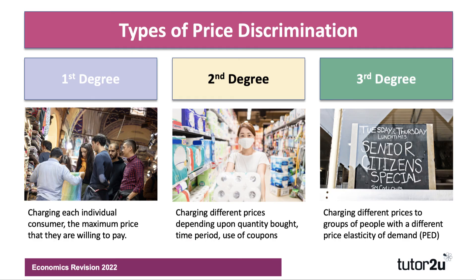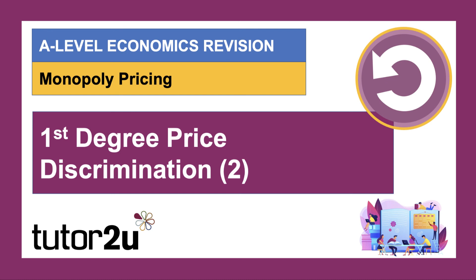Third degree is perhaps the most common type of price discrimination. This is where you're charging varying prices to different groups of people with a different coefficient of price elasticity of demand. The key is to work out which groups have a fairly inelastic demand and which groups have a more price-sensitive demand curve, and you can target and tailor prices accordingly. In the second of our four videos, we'll spend a bit more time focusing on first degree price discrimination. Thank you.